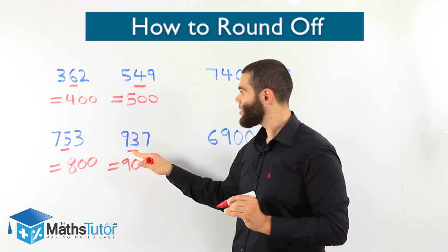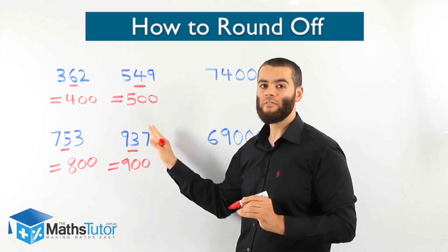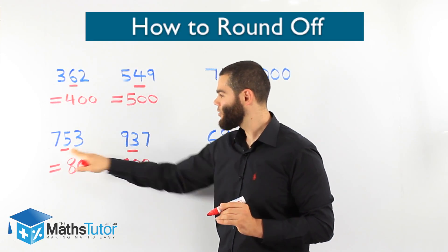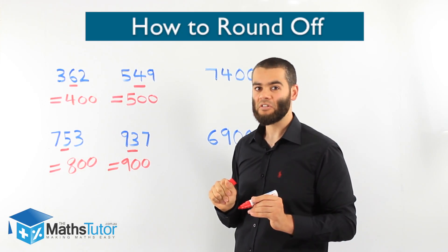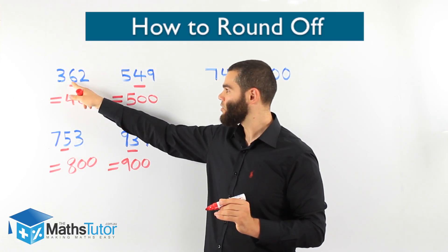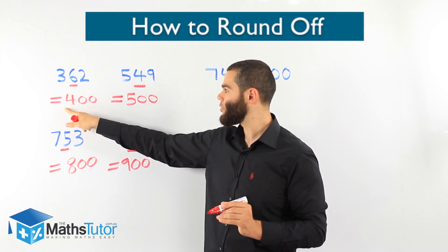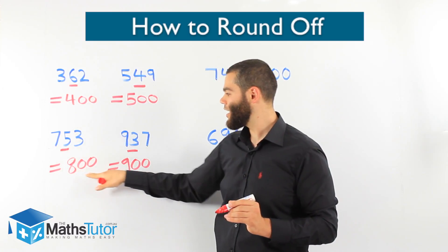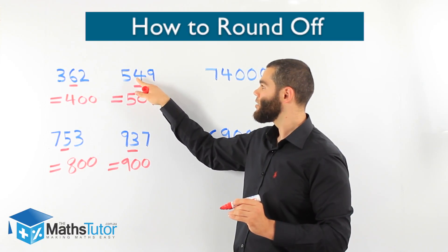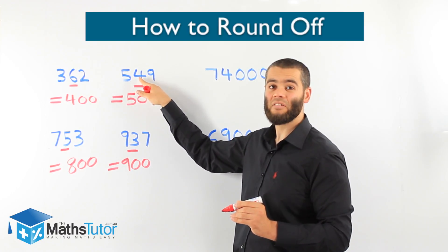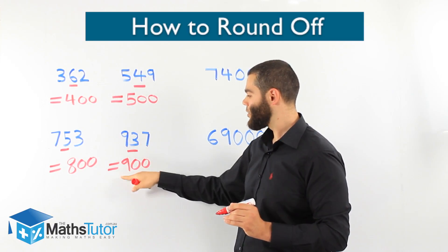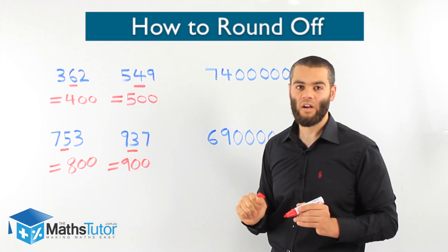As you can see, it's a simple concept. We always look to the number on the right of what we are rounding to — in these cases, the nearest hundred. In two of the examples, the number on the right was 5 or more, so it rounded up. While in the other cases, the number on the right of the hundreds column was less than 5, so it rounded down — like 937 to 900.